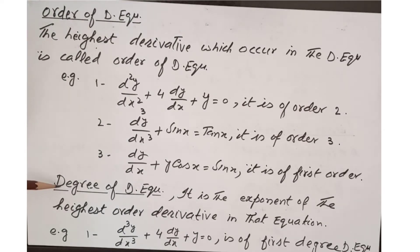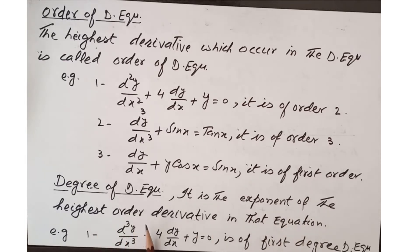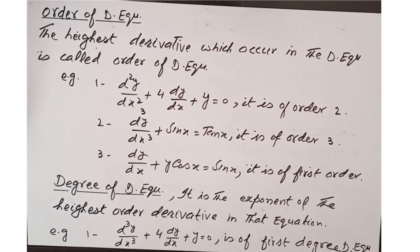The definition of the degree of a differential equation: it is the exponent of the highest order derivative in the equation. For example, if the highest order derivative has a whole power of 1, then its degree is 1. So that equation is a first degree differential equation. The order of a term can be 3, but if its whole power is 1, the degree is still 1.